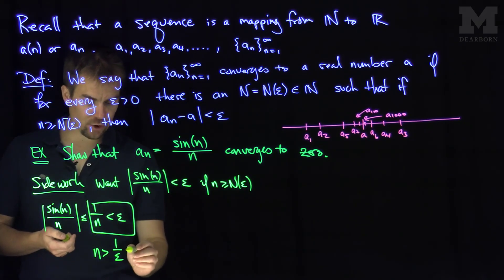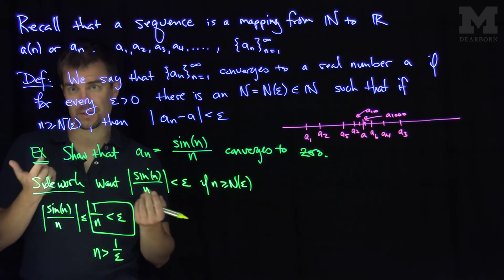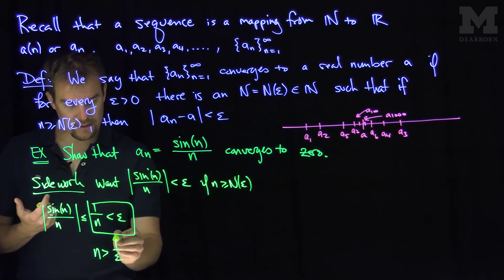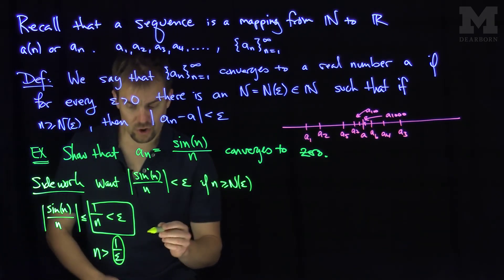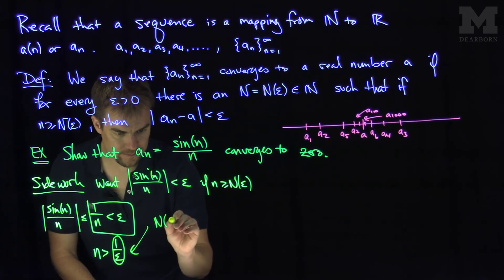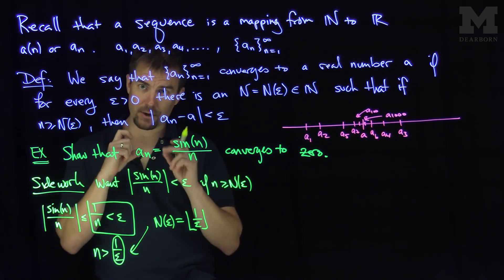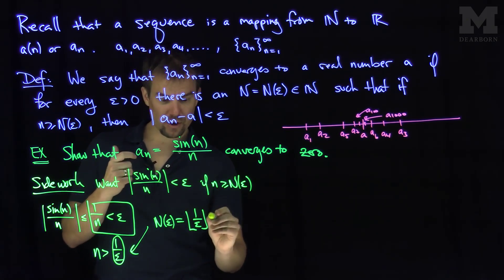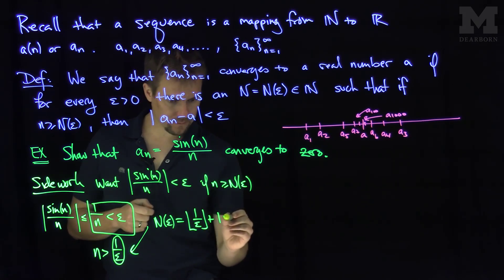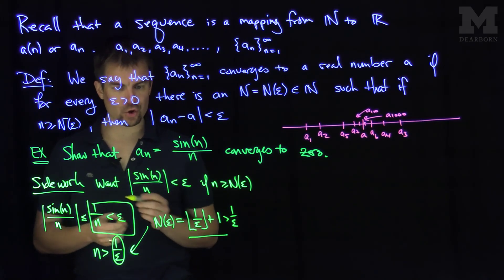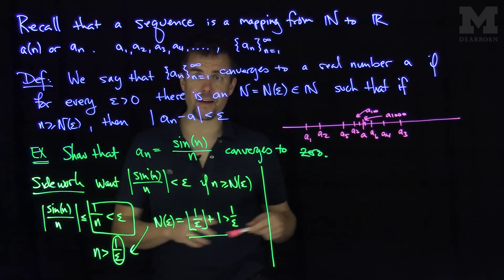Now, the issue with choosing N(epsilon): I can't just choose N(epsilon) to be one over epsilon, because epsilon could be some number whose reciprocal is not necessarily a natural number. So what we need to do is ensure that n is larger than one over epsilon and that N(epsilon) is a natural number. We can do that by choosing N(epsilon) to be the integer floor of one over epsilon plus one. That takes one over epsilon, finds the greatest integer less than or equal to it, and adds one to ensure it's larger than one over epsilon. This will work as our N(epsilon).